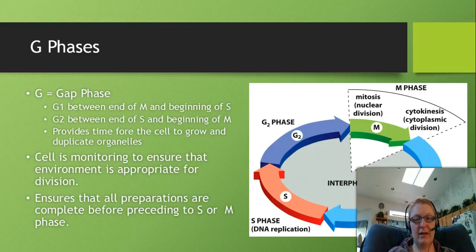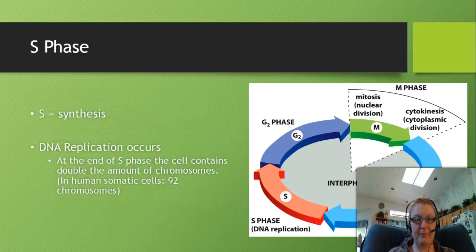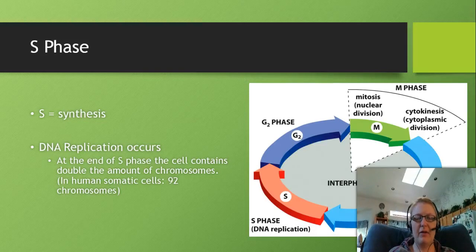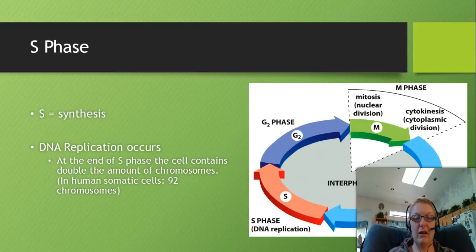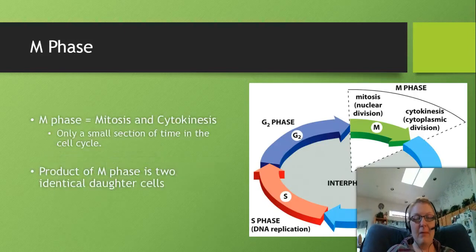The S phase stands for synthesis - this is where DNA replication occurs. We've already covered DNA replication this semester, but you can review it in Unit 2. In humans, at the end of S phase the cell will have twice as many chromosomes - 92 chromosomes. Depending on the organism, the number will just be double whatever it normally is. From the end of S phase all the way through cytokinesis, the cell has double the DNA.